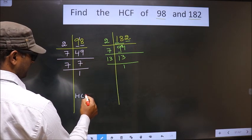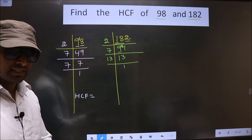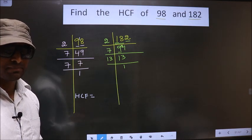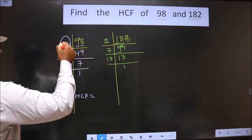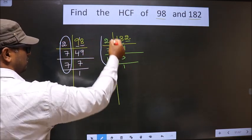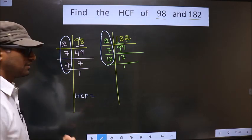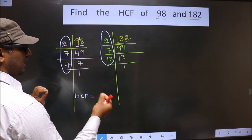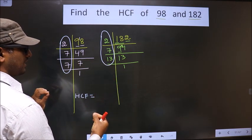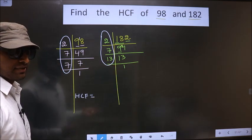Now our HCF is, HCF is the product of numbers that are present here and also here. So, now we should find the numbers that are present in these two places. I repeat, we should find the numbers that are present in these two places. So, let us find.